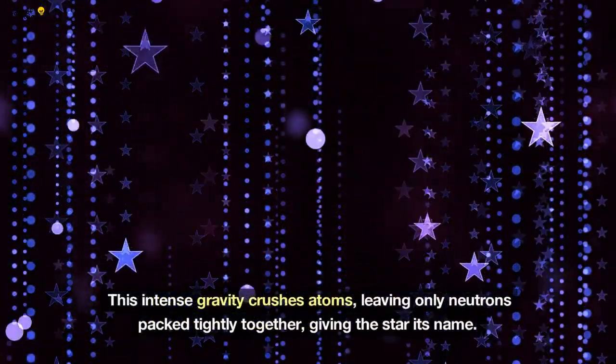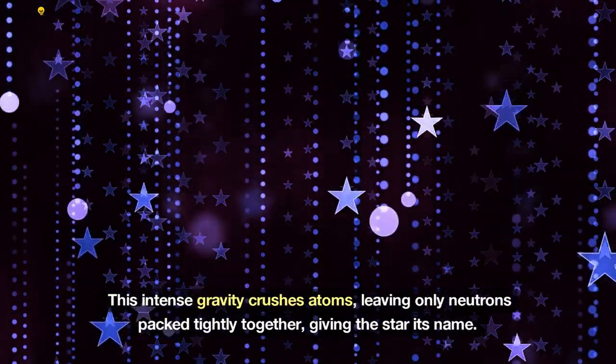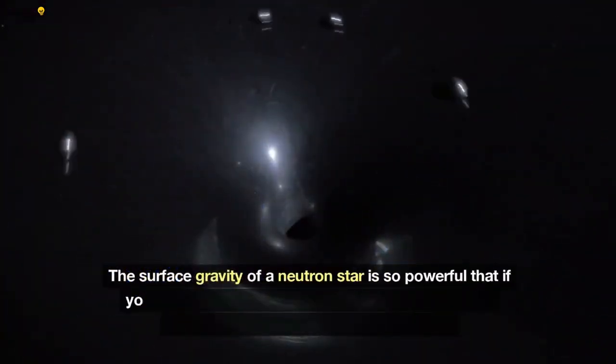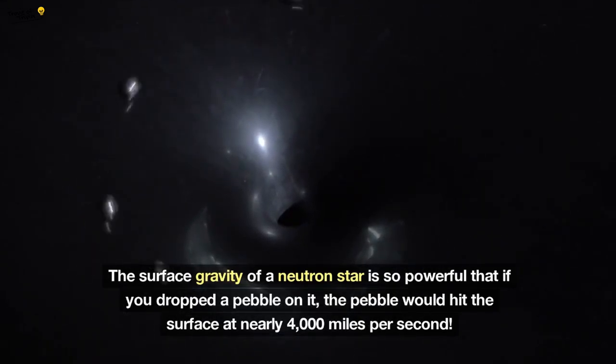This intense gravity crushes atoms, leaving only neutrons packed tightly together, giving the star its name. The surface gravity of a neutron star is so powerful that if you dropped a pebble on it, the pebble would hit the surface at nearly 4,000 miles per second.